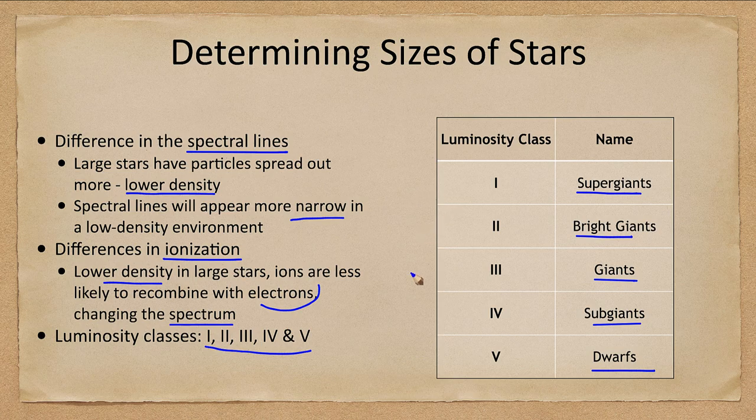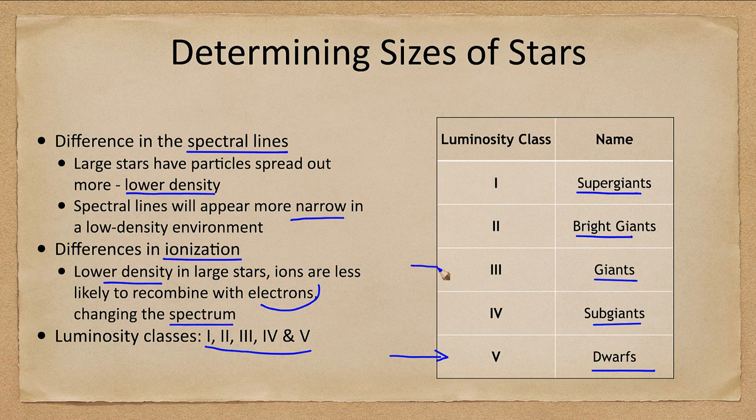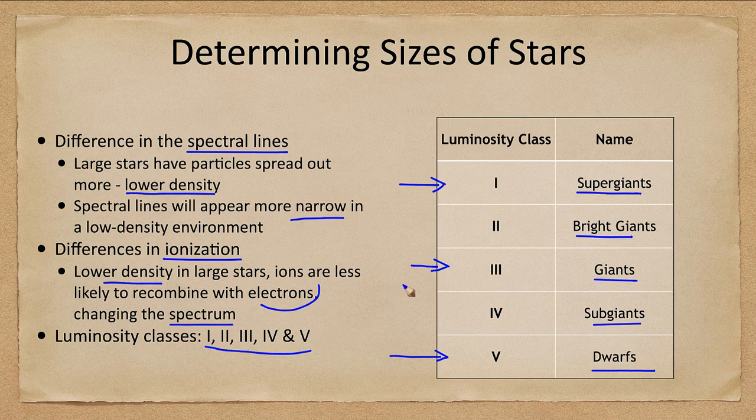Now for this class, we tend to look at the dwarfs, which are the main sequence stars like our sun, the giant stars, generally often red giant stars, and the supergiant stars. We'll look far less at classes two and four. So we'll look at one, three, and five as the main classes we want to look at for this class.